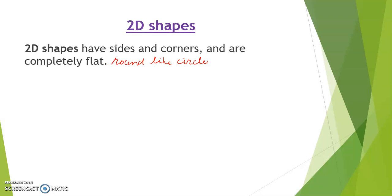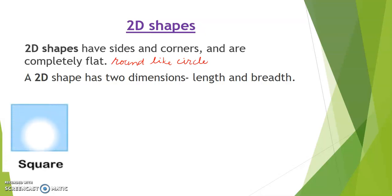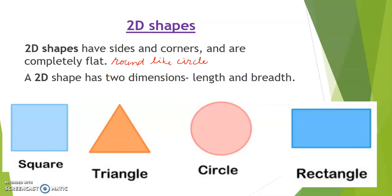2D shapes have sides and corners and are completely flat. Sometimes they can be round like a circle as well. A 2D shape has two dimensions: length and breadth. The examples of 2D shapes are square, triangle, circle, and rectangle.